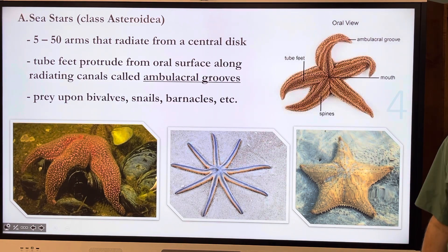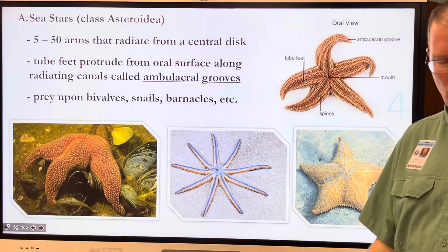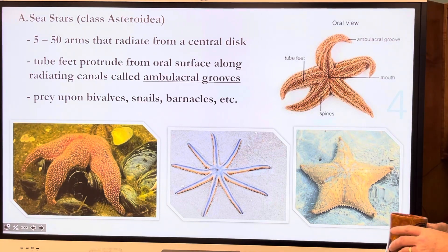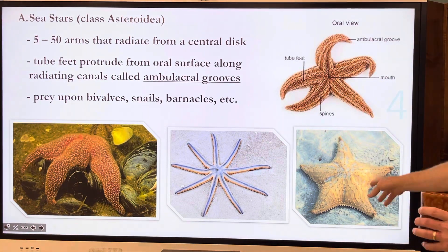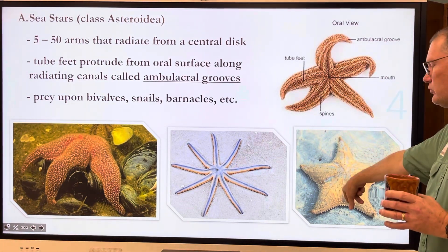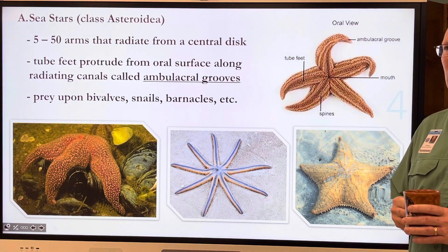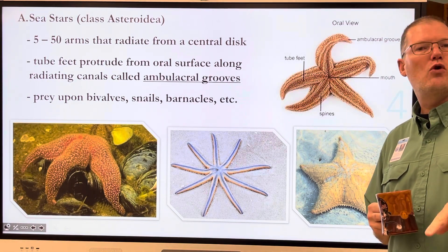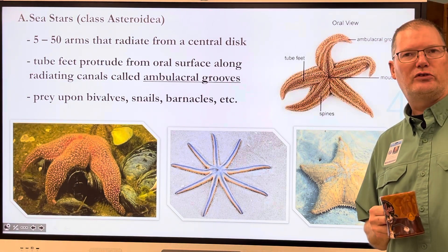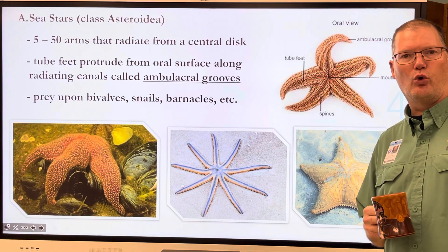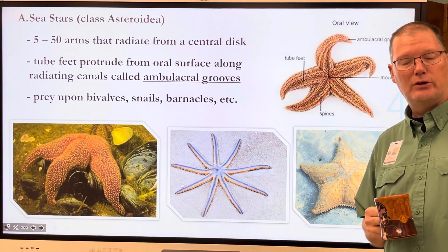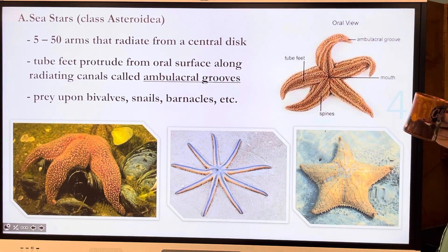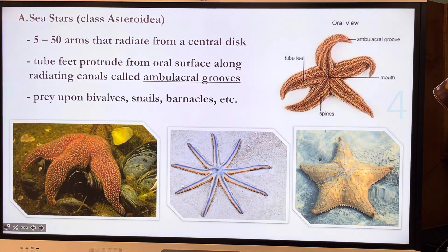The Bermuda star also has a different name — I forget — but I found one of these snorkeling over in Coral Cove, which is near Jupiter, just north of the lighthouse. So we have some neat stuff here.